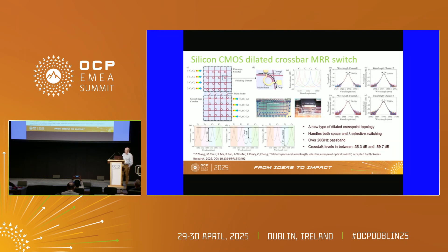Finally, using a dilated crossbar micro-ring switch - again, this is a way of getting to very, very compact structures, and we can design this to have wavelength-space capability as well. There are lots of different architectures that we're interested in, and we're now getting to the point where these devices are starting to get use in applications - both in telecoms, where they're being used in a European project for radio access networks and dynamically switching those networks, and also with NVIDIA in data centres.